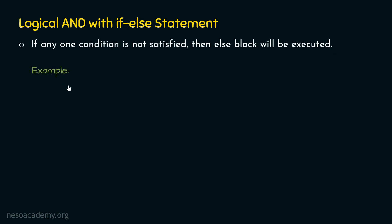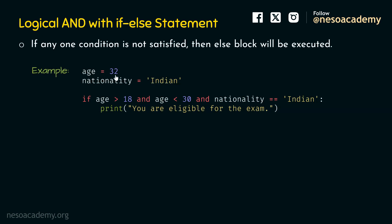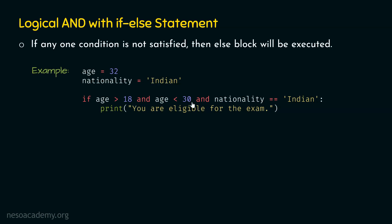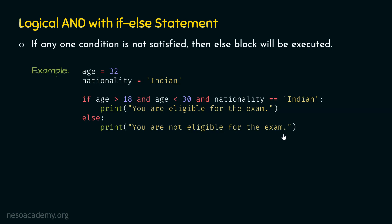We will consider the same example with some modifications. Here, in place of age equals 20, we now have age equals 32. We are checking the same conditions. Since age is 32, the condition age less than 30 is not satisfied. So you are eligible for the exam will not be printed. If we want to print you are not eligible for the exam when any condition is not satisfied, we need an else block. The output of this program is: you are not eligible for the exam.